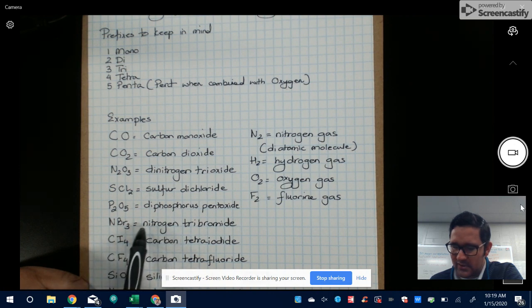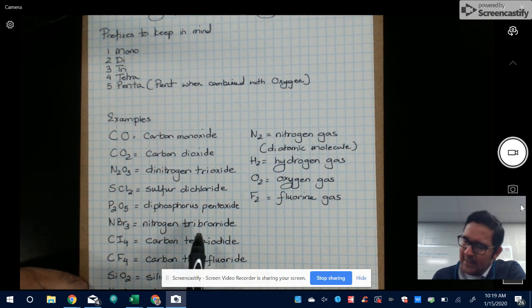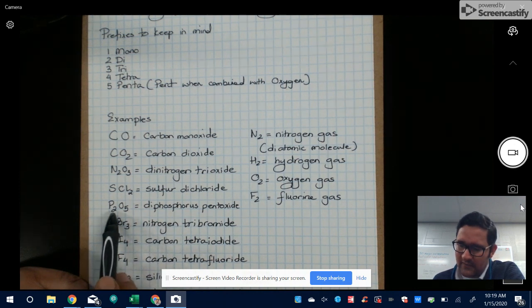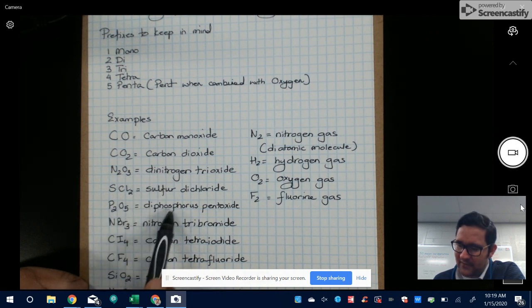Remember, if it's a single element, the first element is just a single one, you're not going to say mononitrogen. It's fine to just say nitrogen. And then the second element definitely put the prefix. The first element only put the prefix if there's two or more, such as the phosphorus example and the dinitrogen and the diphosphorus examples.